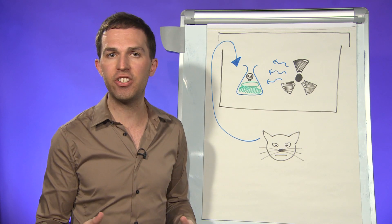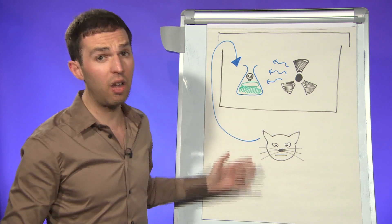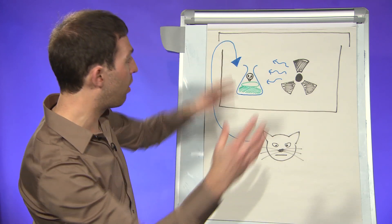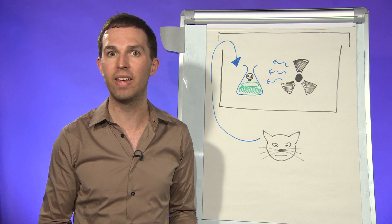But of course that's going to have implications on the cat, meaning the cat will be both dead and alive at the same time. And it's only when you take the lid off of the box, make an observation, that the wave function collapses and you find out which one it actually is.